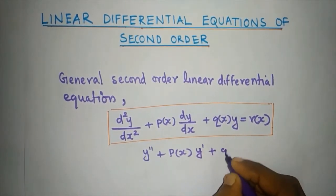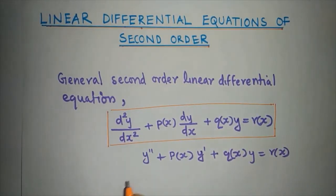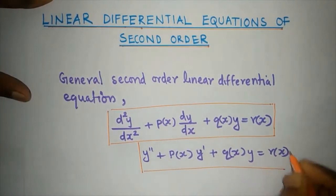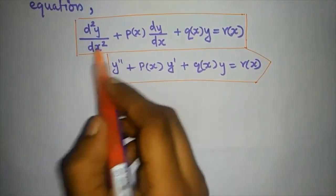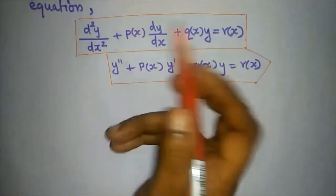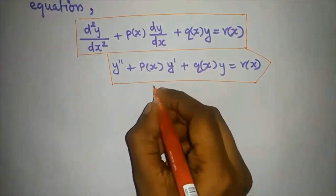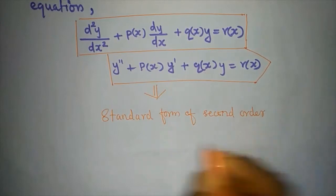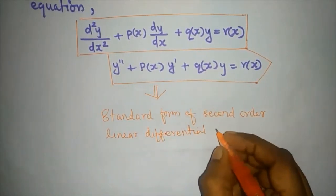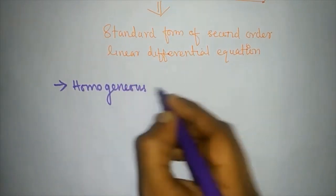This can be written as y'' plus P(x)·y' plus Q(x)·y equals R(x). This equation is called linear because the differential terms have power one. It is the standard form of a second order linear differential equation.